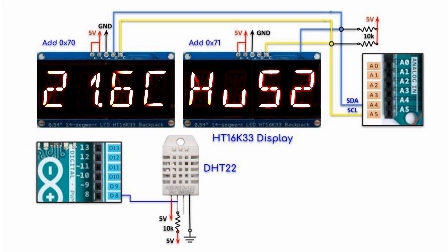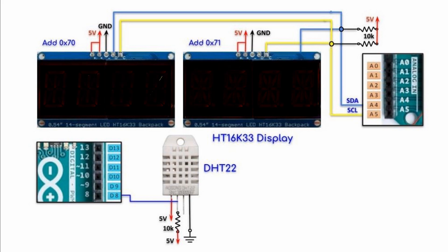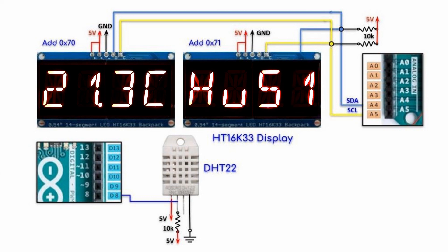Every 30 seconds, the displays indicate the room conditions. If temperature is between 20 and 25 Celsius, OK is displayed. If temperature is less than 20, cold is displayed. If temperature is greater than 25, warm is displayed.